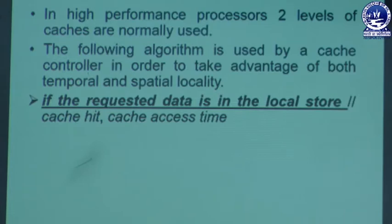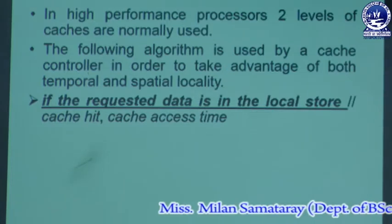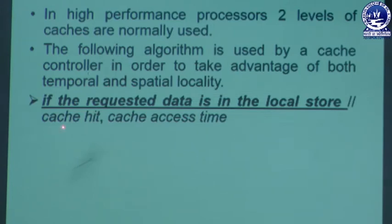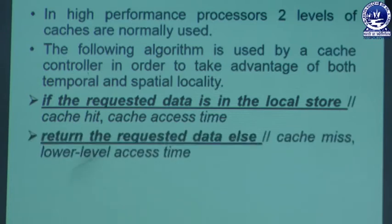In the first step, the controller receives the request generated by the processor. If the requested data is in the local store, that is called a cache hit, and you calculate the cache access time. In the next step, if the requested data is present in the local store or the L1 high-level cache, that data is returned to the processor — the processor reads the data from the cache memory.